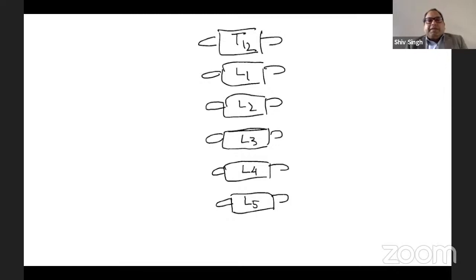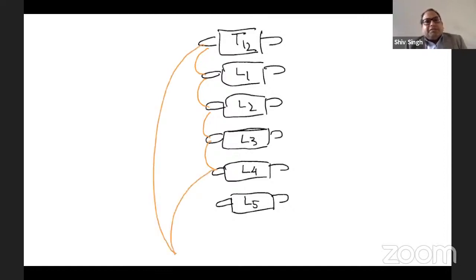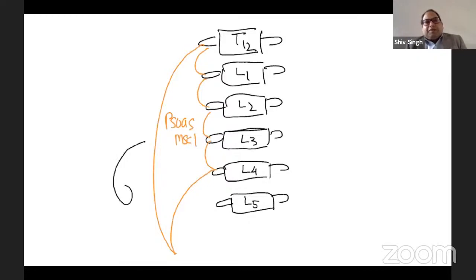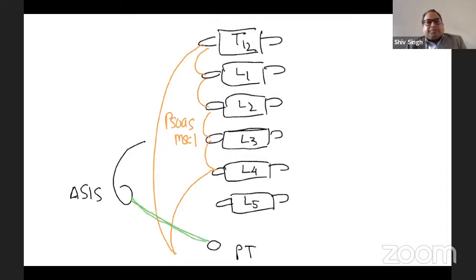With a different color, we draw the iliopsoas muscle, which takes origin from T12, L1, L2, L3, L4 — that's our psoas muscle. The nerves lie in the psoas compartment and take origin from L1 through L4. We have the anterior superior iliac spine and the pubic tubercle, joined by the inguinal ligament. The iliopsoas inserts into the medial side of the femur at the lesser trochanter.